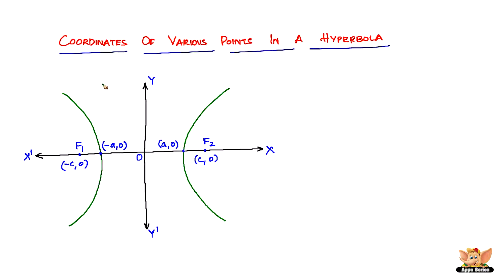This is just one type of hyperbola — the one that opens to the left and right. We also have another hyperbola that opens upwards and downwards, which we will draw right now.